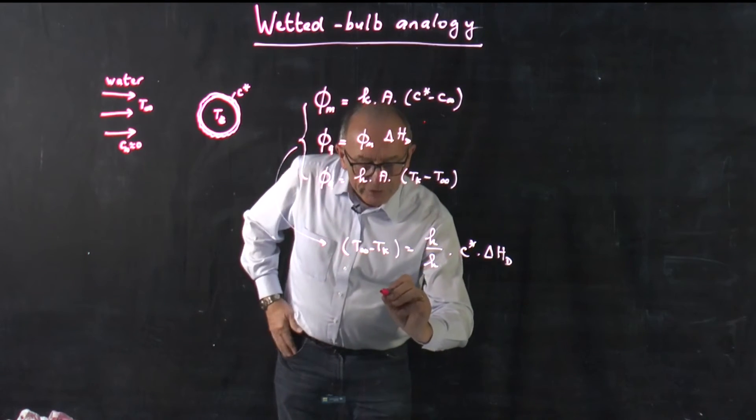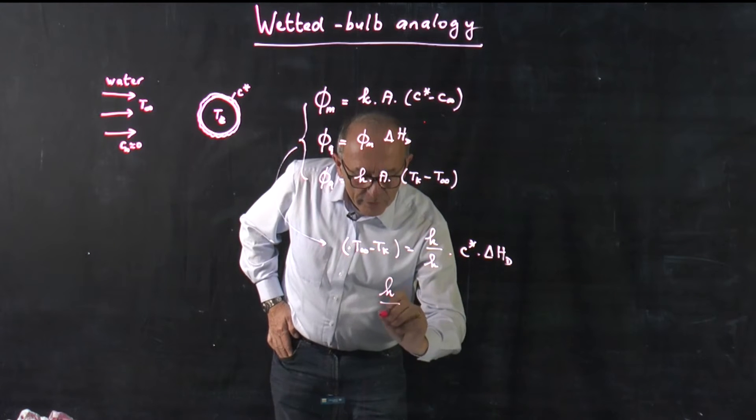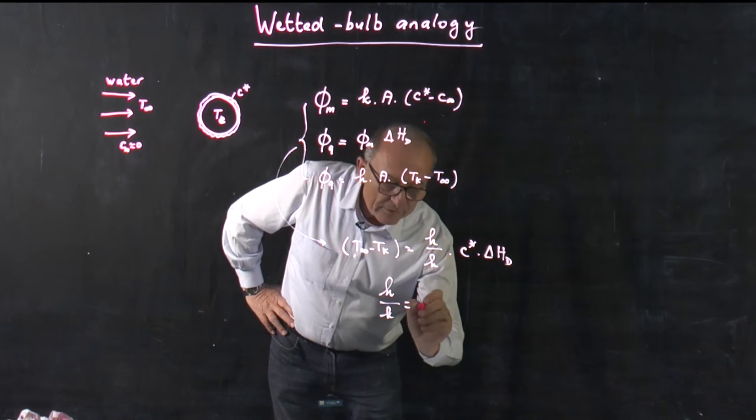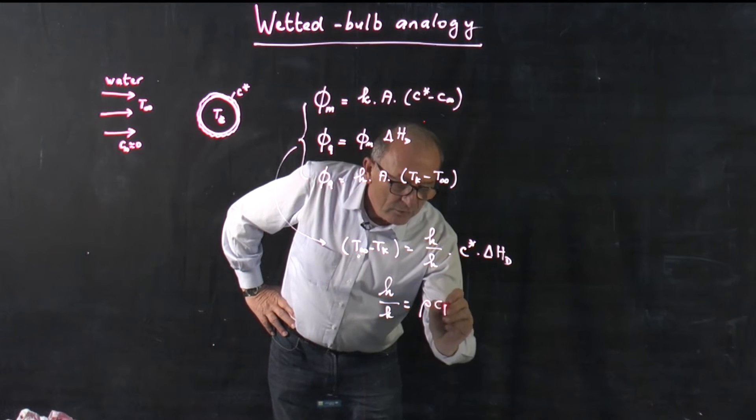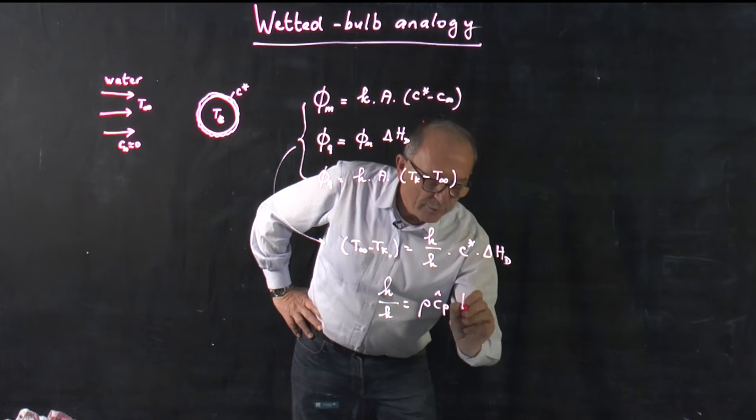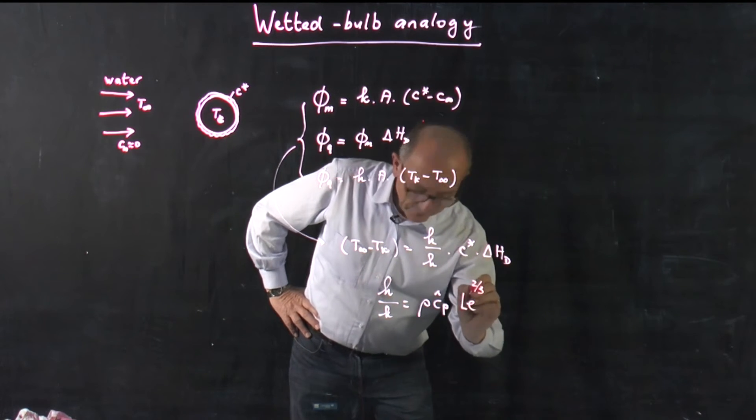And we know from Chilton and Colburn that H over K, which is quite similar to the wetted bulb temperature, could be easily written as the density multiplied by Cp multiplied by the Lewis number to the power 2/3.